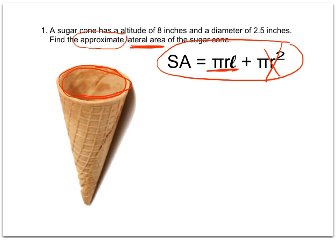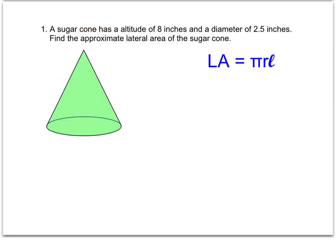So I'm going to write that out as my new formula of lateral area, and I'm just going to have a basic cone here so I can label my pieces. Let's first look at what information is given to us and label our figure. We have an altitude of 8 inches and a diameter of 2.5 inches. It's a good idea to draw a cone and put all the information in that we know.